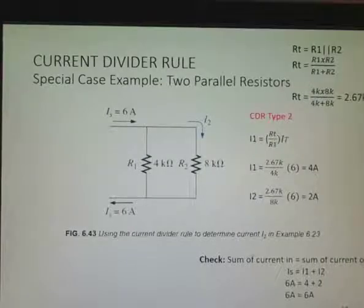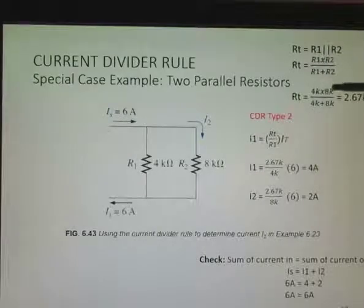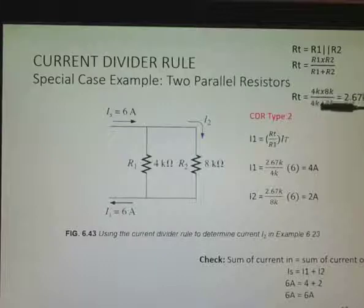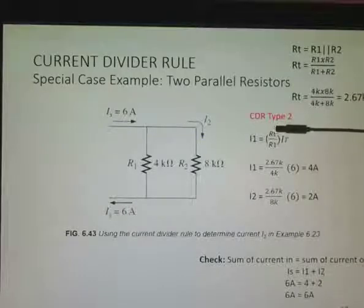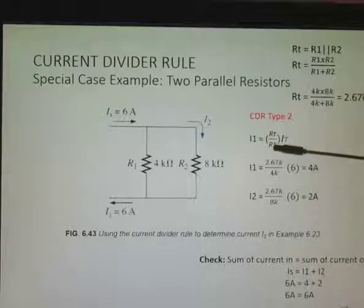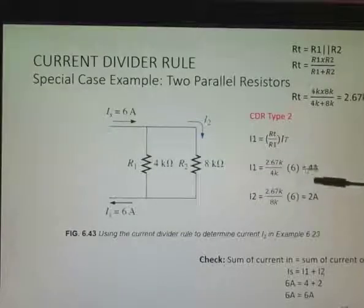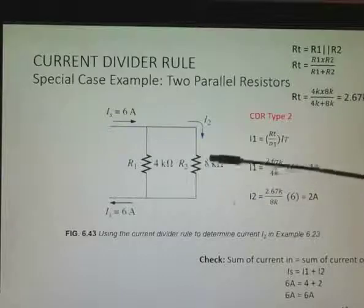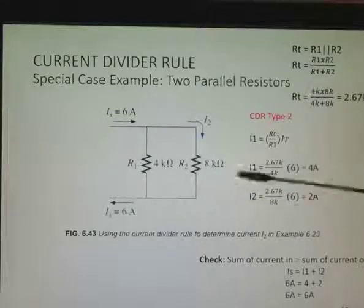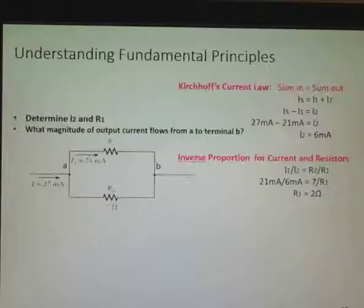Now if I try the other type, I have to find what the resistors are in parallel. And so I have 4k times 8k over 4k plus 8k. I get 2.67k. I'll plug that in here for RT. And I have 6 amps coming in. And I have 4k. That's the resistor of interest because I want to find I1, so I use 4k there, and I get 4 amps. On finding I2, I put 8k in there, and I get 2 amps. And I sum those and I get 6 amps. I get the same answer, both methods. Whichever one you want to use.